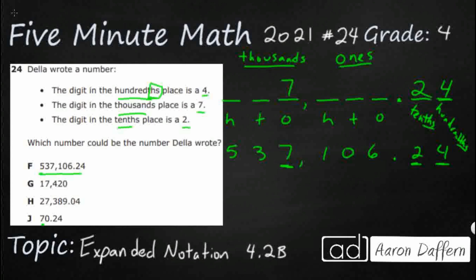G. So it has no decimals, so I can already tell you that that's going to be incorrect. We've got 17,420. So the problem with G is it does have a 7 in the thousands spot, so that's great. It's got nothing in the tenths and it's got nothing in the hundredths. And it needs to have a 2 and a 4 in those two spots. So that's why G is incorrect.